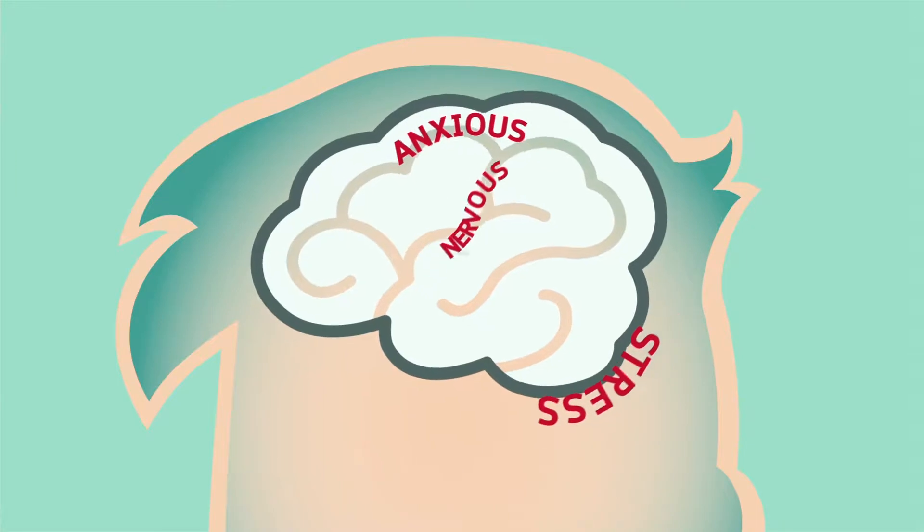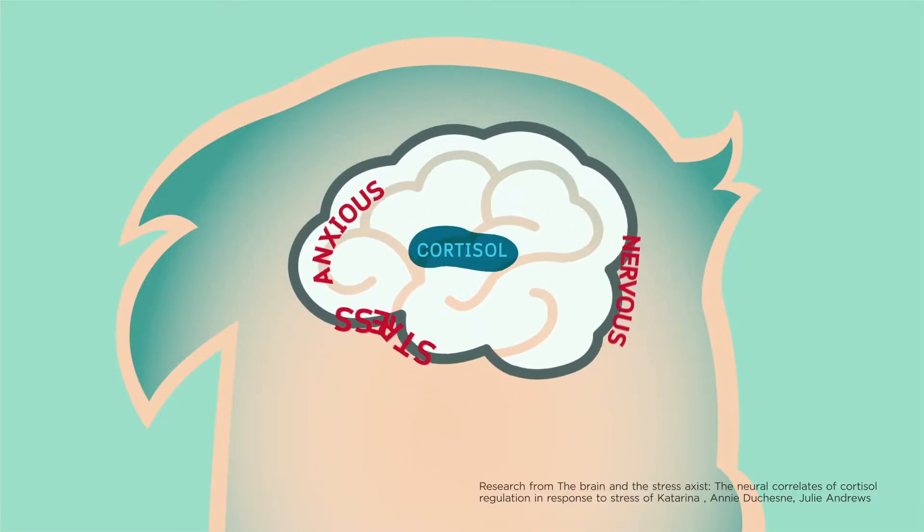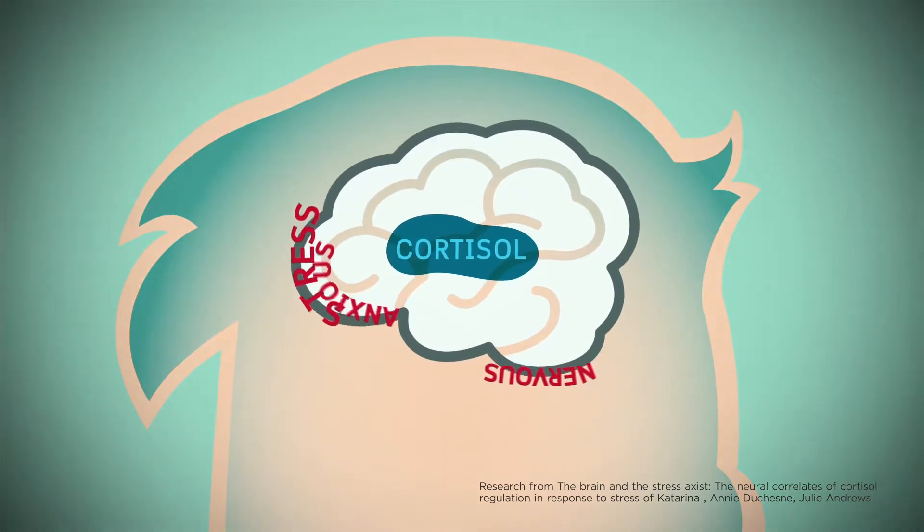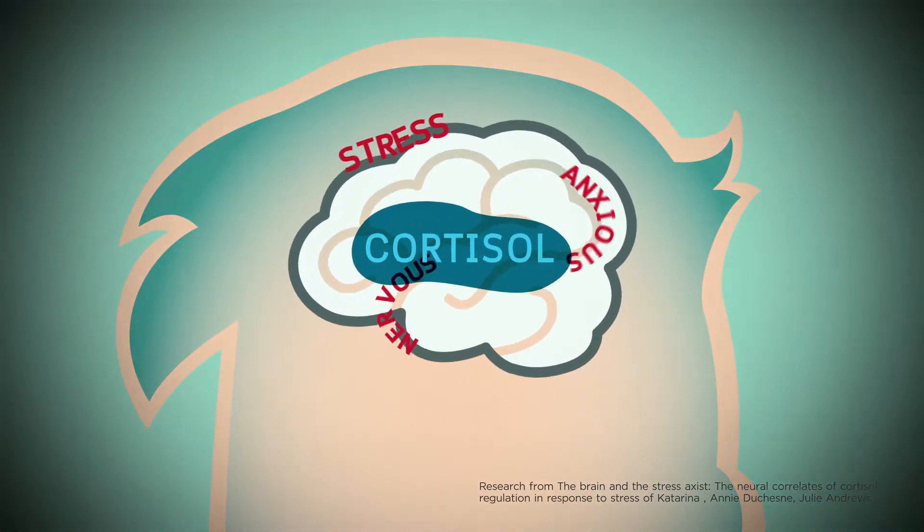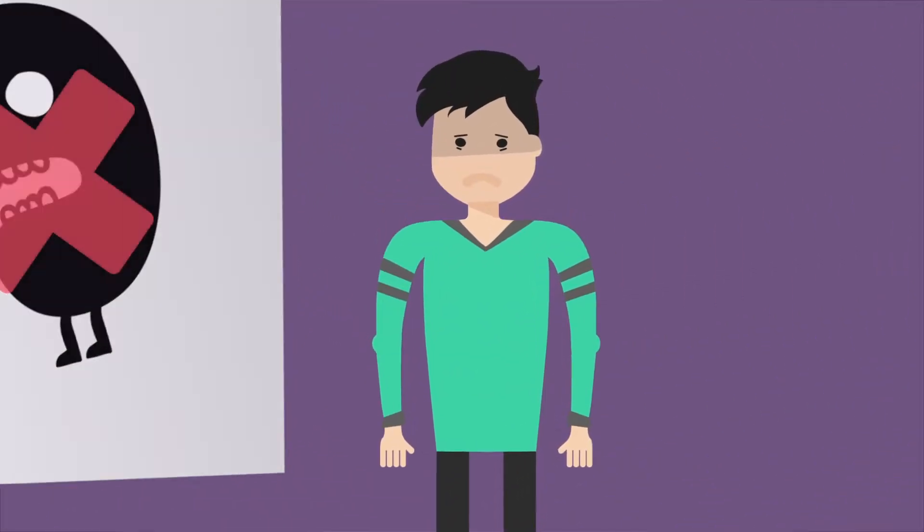scientists found that cortisol, the stress hormone, can cause some brain areas to shrink, and even spread into brain regions that control our memories, decision-making, and how we think. It's quite understandable that your recent works are going downhill.